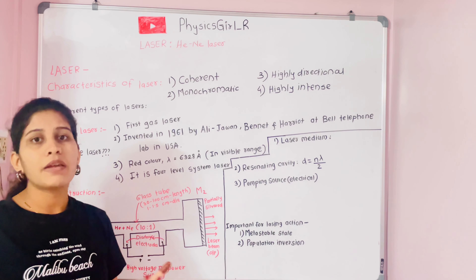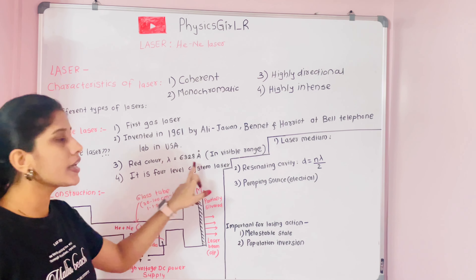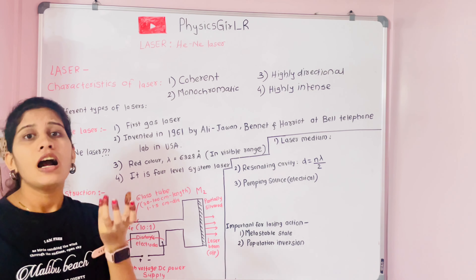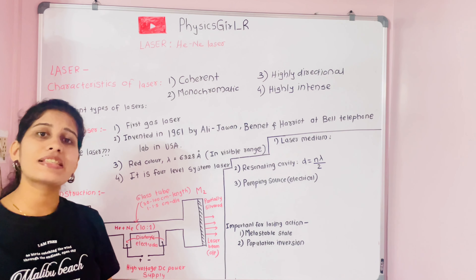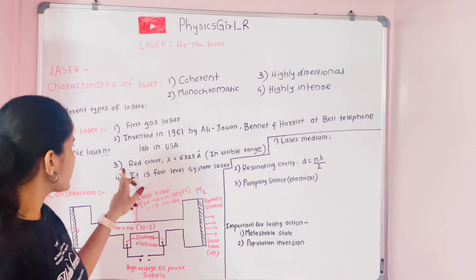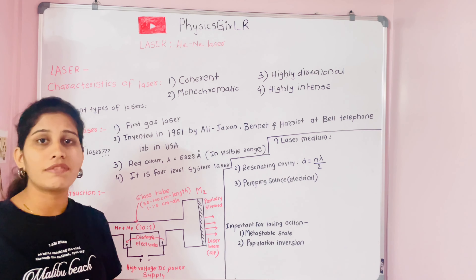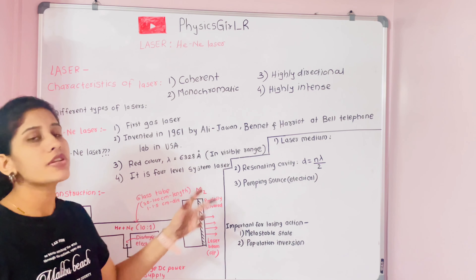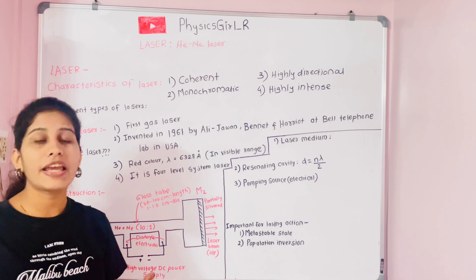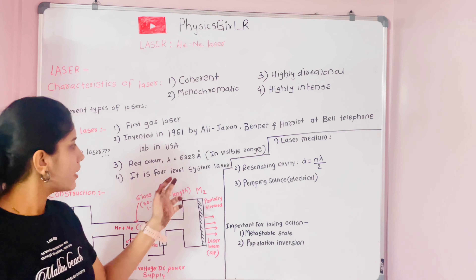The helium-neon laser emits monochromatic red light with a wavelength of 6328 Å, which falls in the visible range. It is a four-level energy system laser because there are four main states in which it operates according to the energy level diagram.